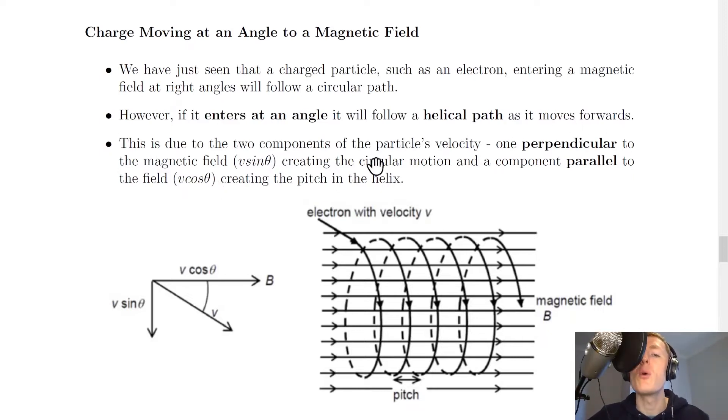This is due to the two components of the particle's velocity, one perpendicular to the magnetic field, which is v sine theta, creating the circular motion, and a component parallel to the field, which is v cos theta, creating the pitch in the helix.